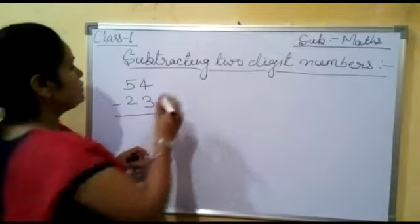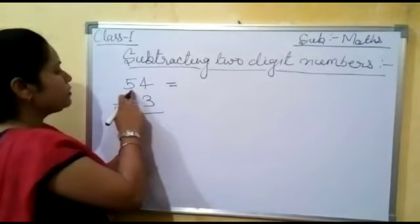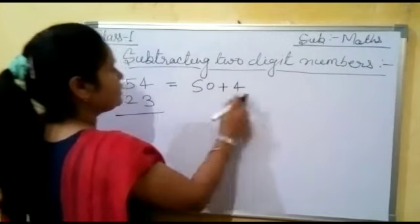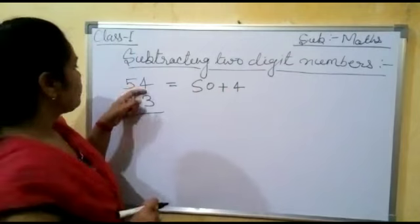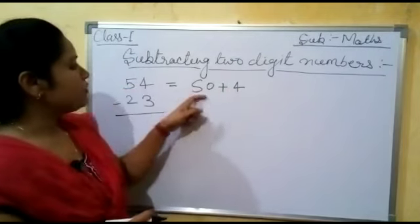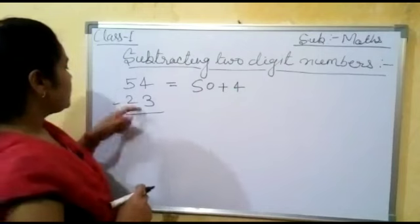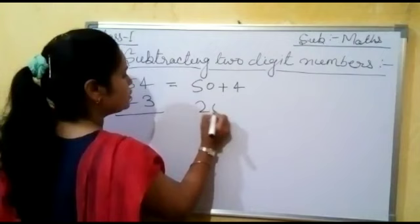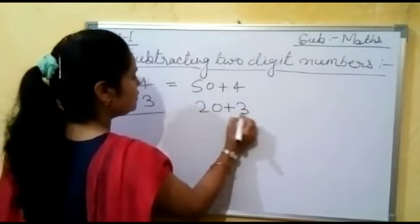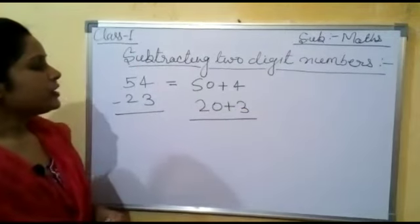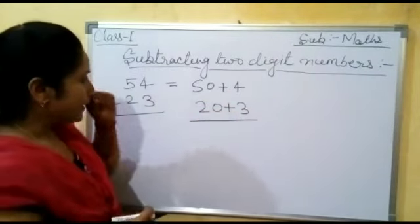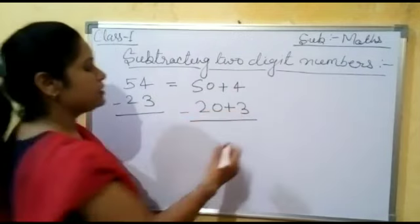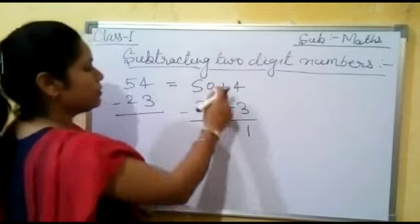The first step is to expand 54 in the form 50 plus 4. So 54 we can write as 50 plus 4. Similarly, we will write 23 in the form 20 plus 3. Now here we can subtract 4 minus 3, so 4 minus 3 becomes 1, and a plus sign will come here.